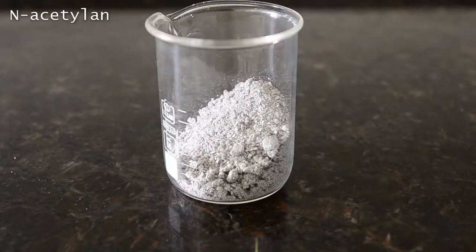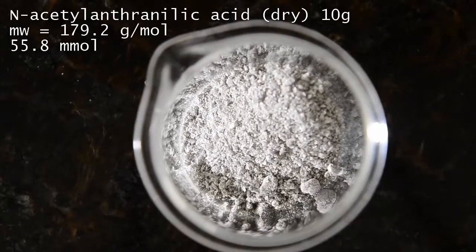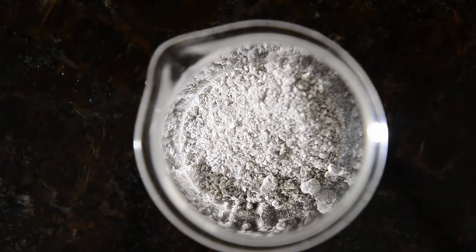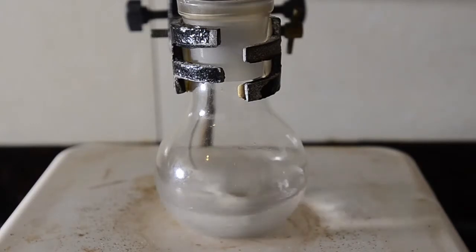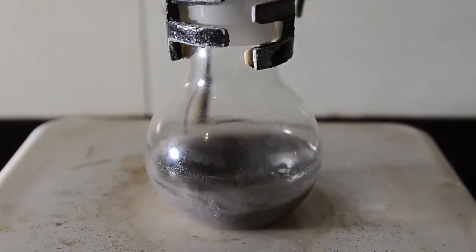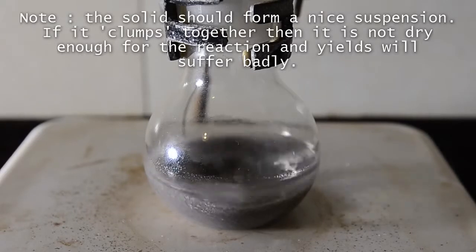Now measure out 10 g of dry acetylanthranilic acid. We're using a crude batch we made from some fairly impure anthranilic acid and so it's a gray color. We wanted to test to see if we could use dry but fairly crude starting materials in this reaction successfully. With stirring, add this to the flask containing the toluene. It won't dissolve much, but it will form a suspension. If your solid clumps together at this point then it is not dry enough and your yields will suffer badly.